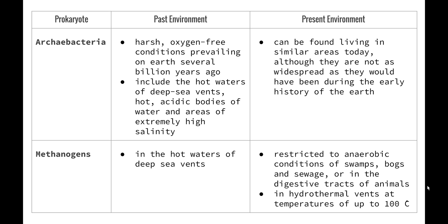The archaebacteria, capable of living in very hostile environments, were probably well adapted to survive the harsh, oxygen-free conditions prevailing on Earth several billion years ago. Examples of where they may have been found include the hot waters of deep sea vents, hot acidic bodies of water, and areas of extremely high salinity. Archaebacteria can be found living in similar areas today, although they are not as widespread as they would have been during the early history of the Earth.